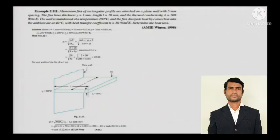Aluminium fins with a rectangular profile are attached on a plane wall with 5 mm spacing. The fins have thickness y = 1 mm, length = 10 mm, and thermal conductivity k is given. The wall is maintained at 200°C and the fins dissipate heat by convection into ambient air at 40°C with a given heat transfer coefficient. Determine the heat loss.